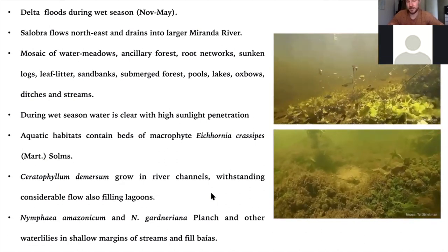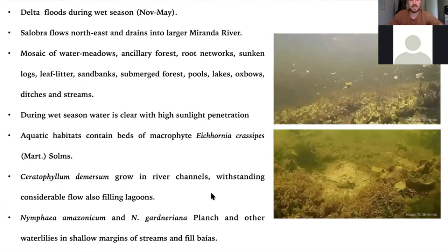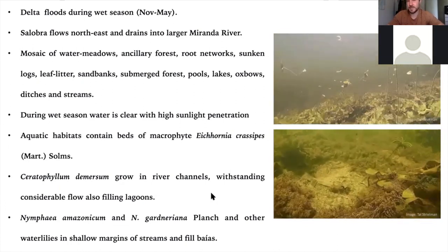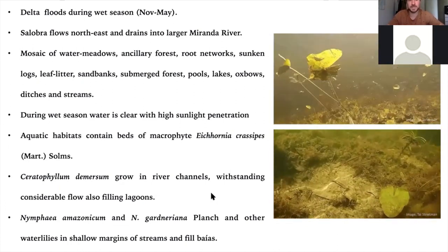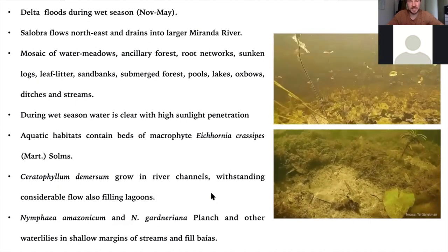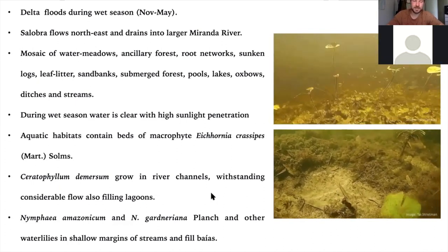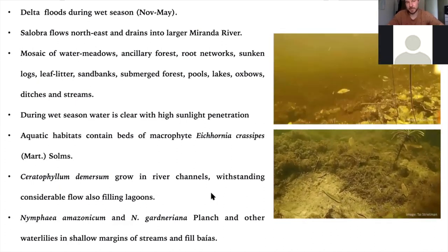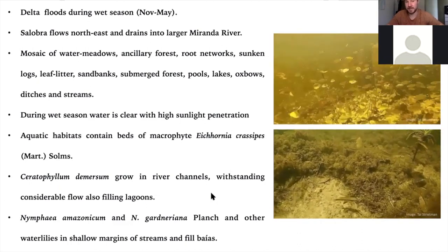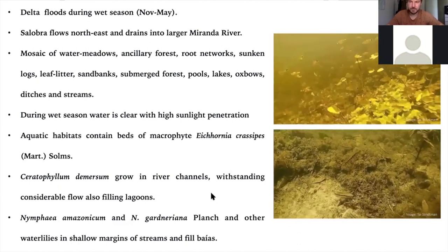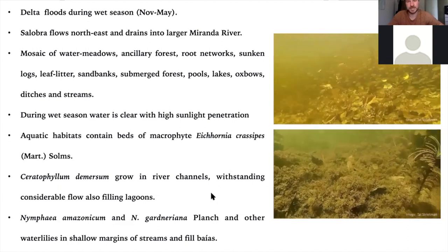Aquatic plants found in the wet season include Eichhornia crassipes — the water hyacinth — and Ceratophyllum demersum, known as hornwort, which is very common and ubiquitous. Two species of lily have also been identified: Nymphaea amazonicum and Nymphaea gardeneriana, usually found in the lagoons during the wet season.